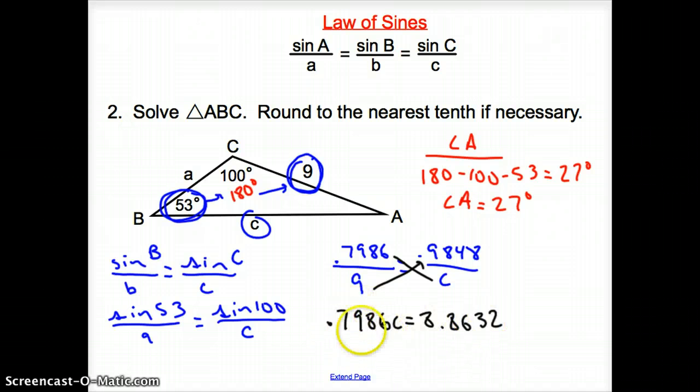We have to divide by this. We have to divide by 0.7986. So, we divide by 0.7986. We are left with, for c, c is going to equal 11.1. So, now, this c right there equals 11.1.